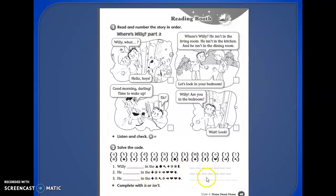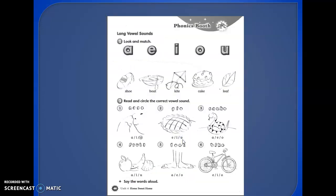Now we continue with the next page, long vowel sounds. Look and match: cake, bee, shoe, boat, and kite. Excellent. Read and circle the correct vowel sound. Okay, the correct vowel sound.